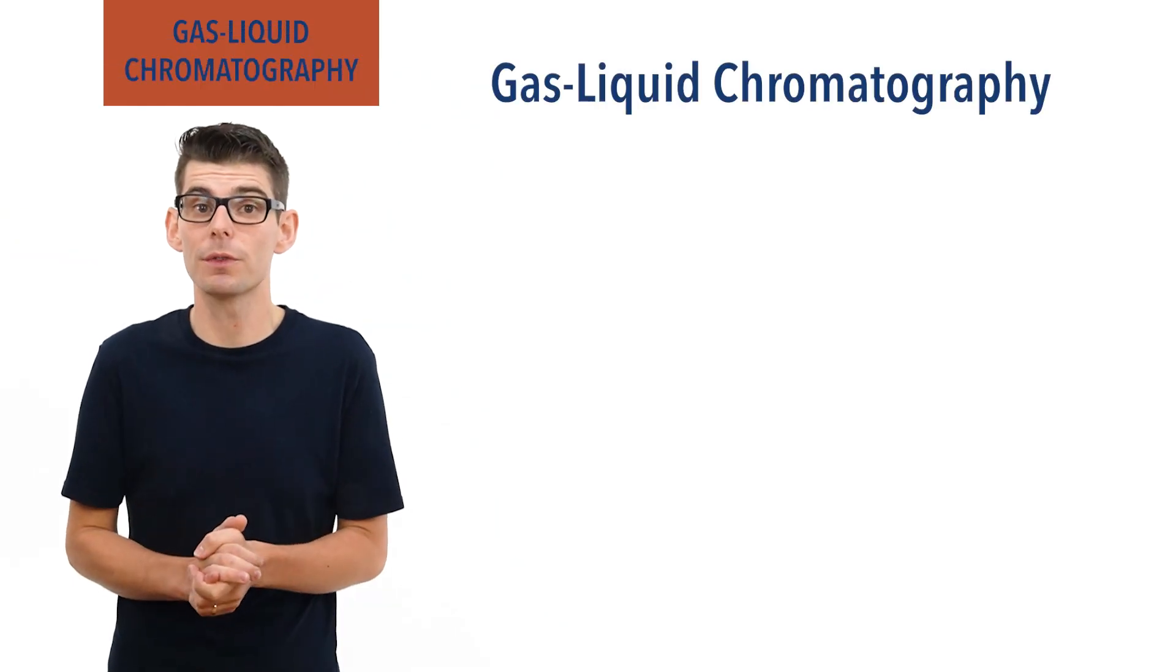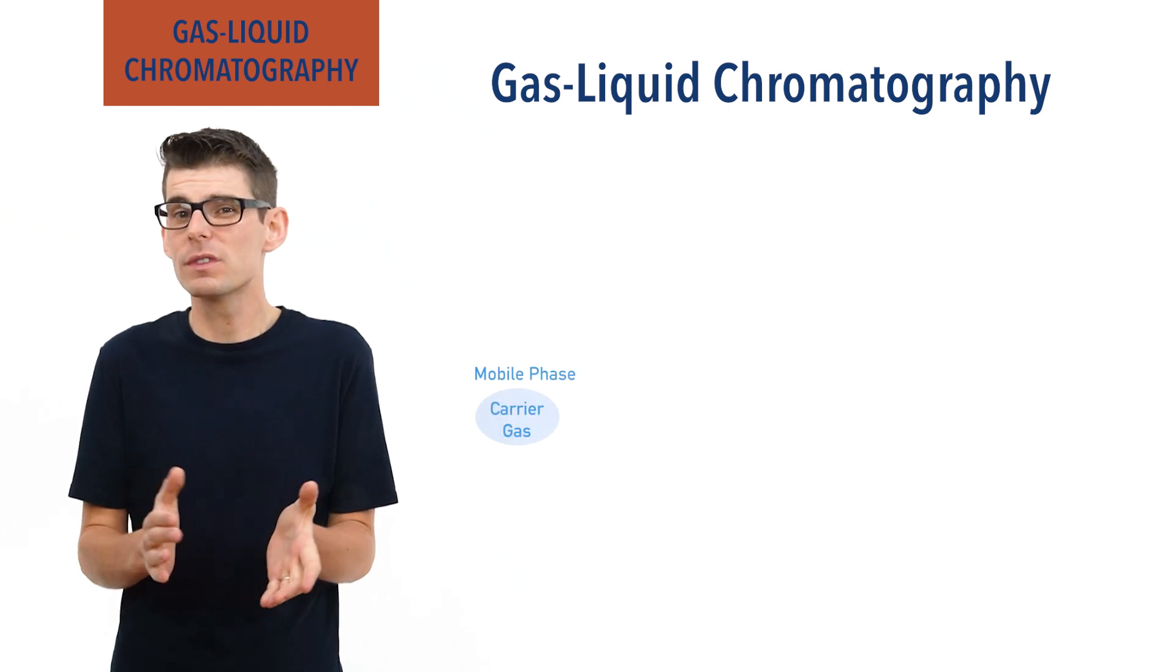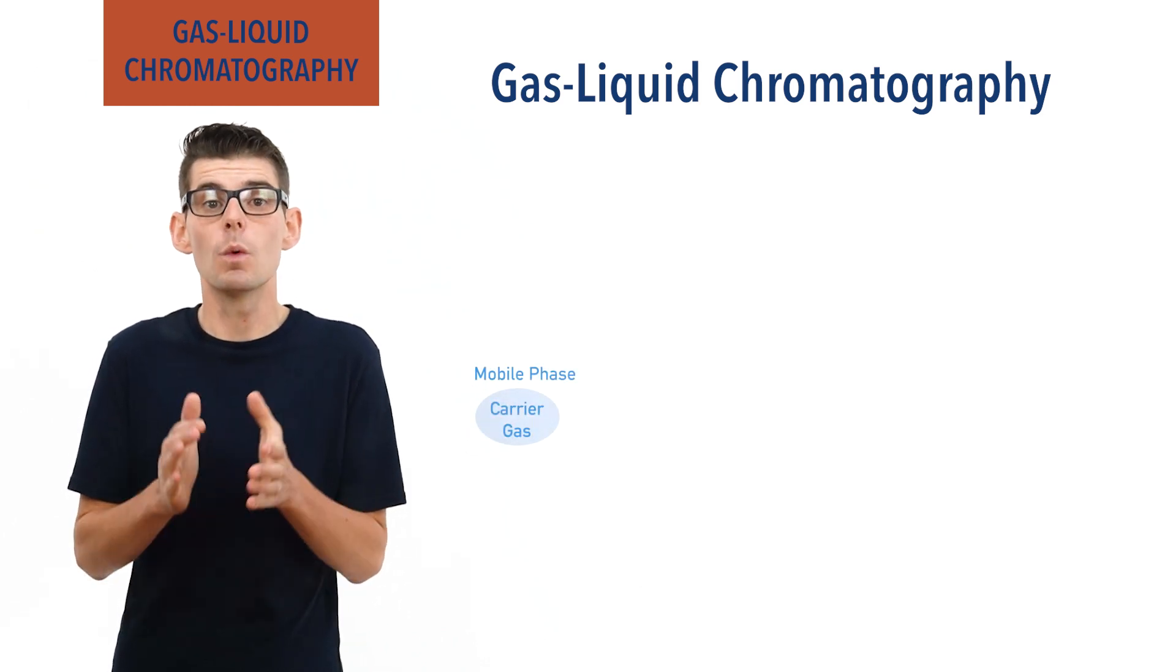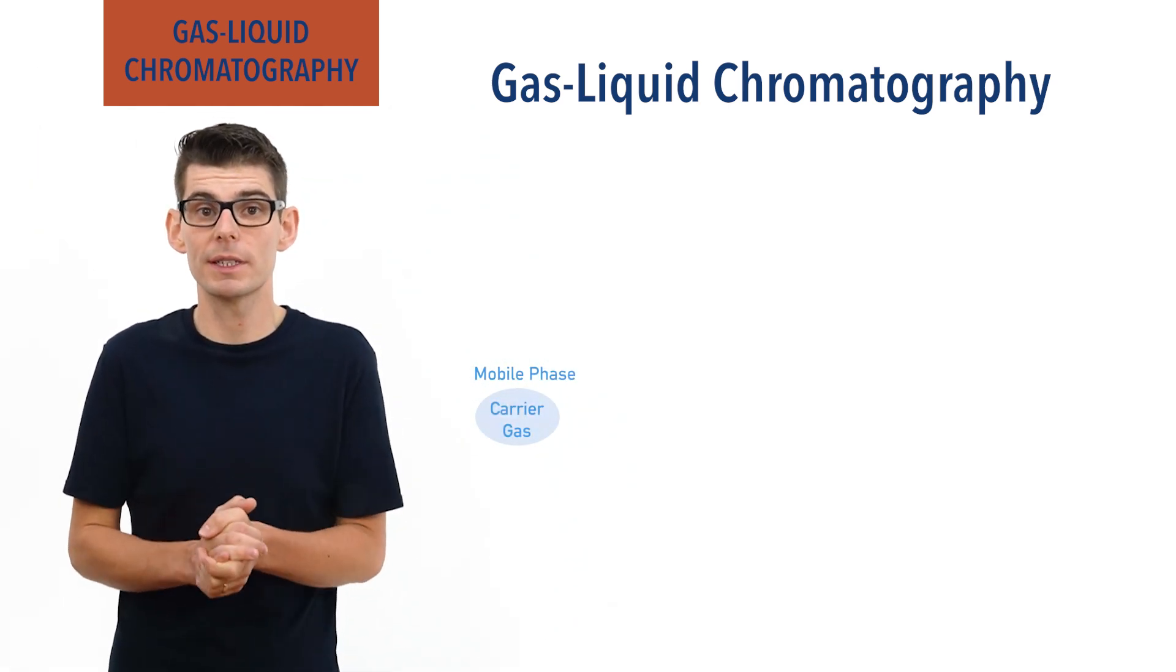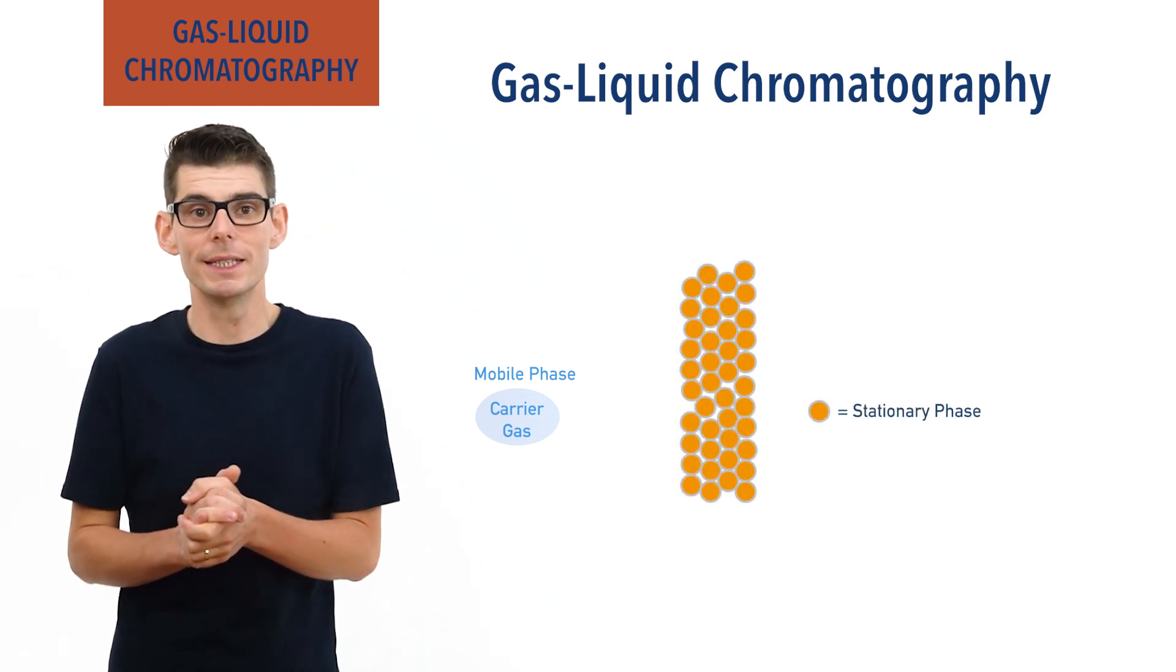In gas liquid chromatography, the mobile phase is an inert carrier gas, often something like helium or argon that won't react to the samples being studied, and the stationary phase is a thick liquid coated on small beads.